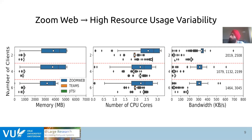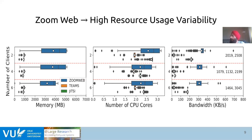In Teams, the lower bandwidth consumption is also due to an architectural choice where only the video of the speaker is shown. Overall, across all three metrics, we would recommend using Teams as it performs the best. Another surprising result was the decrease in values in some cases with an increase in number of clients, which we attribute to a decrease in video quality with more clients — but this needs to be investigated further.